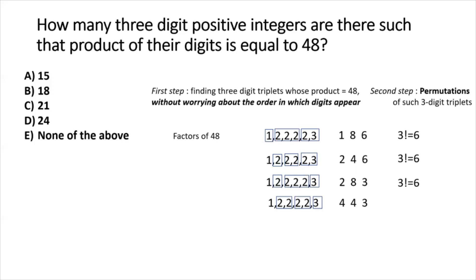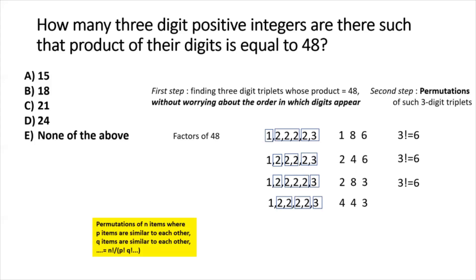For {4, 4, 3}, we have two identical digits. Using the formula for permutations of n items where p items are identical — n! divided by p! — we get 3! ÷ 2! = 3. This corrects for permutations of the identical items, which don't generate unique arrangements.